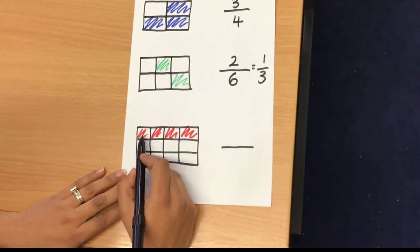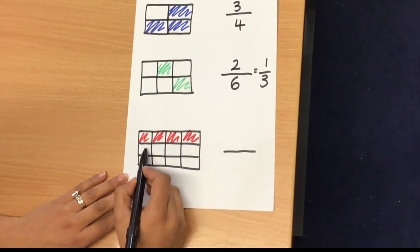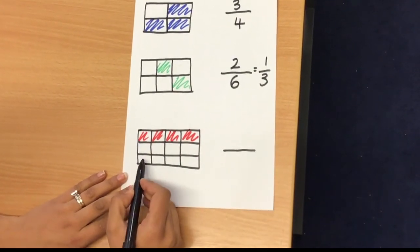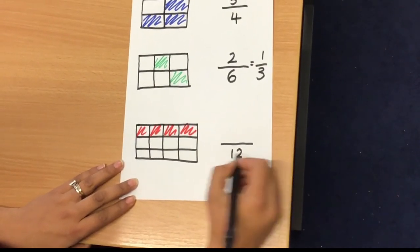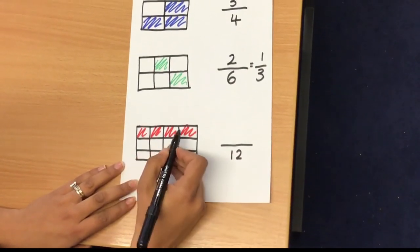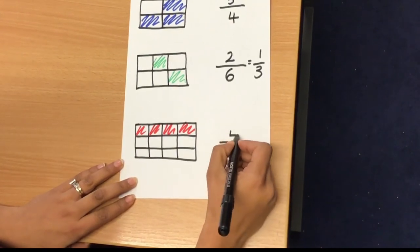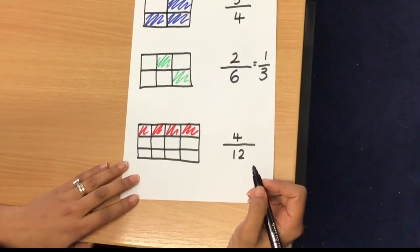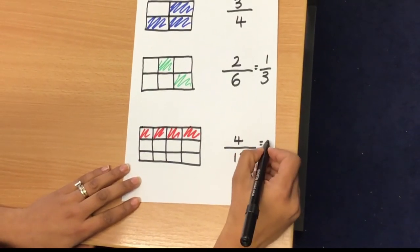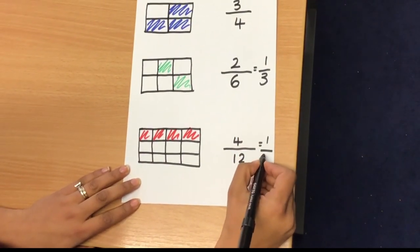How many parts do I have here? I've got one, two, three, four, five, six, seven, eight, nine, ten, eleven, twelve. I have one, two, three, four, four twelfths as a fraction. Again, if you wanted to simplify that, this would be the same as one third.